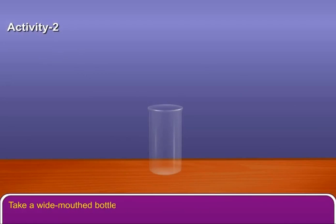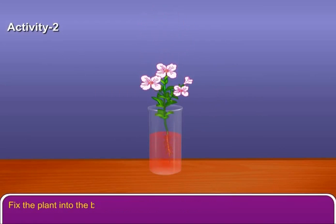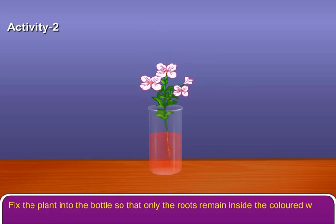Take a wide-mouthed bottle and fill it with colored water. Fix the plant into the bottle so that only the roots remain inside the colored water.